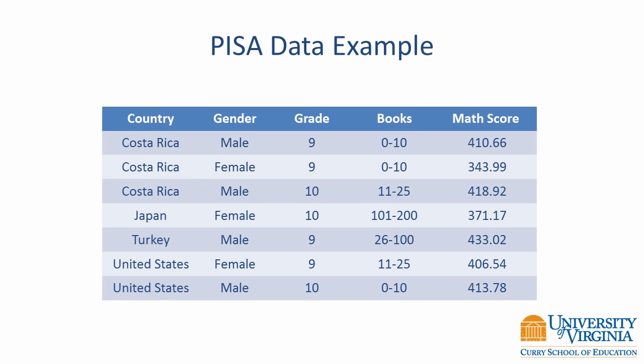Now let's look at some examples of the different data types in the PISA data. Which two variables in the table are nominal? Country and gender are nominal variables — the ordering of these variables does not matter. Now which variables are ordinal?